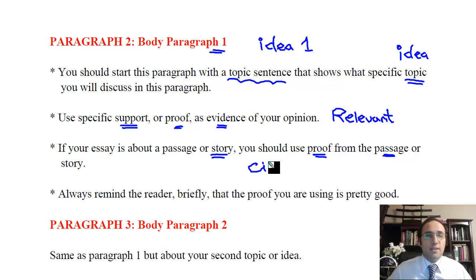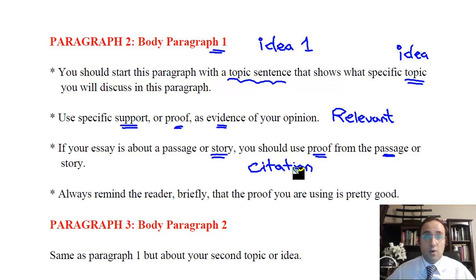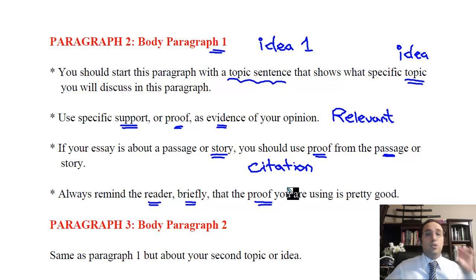If your essay is about a passage or a story, which is usually the case in the Bergen Academy's test, you should use proof from the passage or the story. This is what we call a citation. You should use a citation from the story — quote the story and use this as proof for the topic that you're trying to prove.